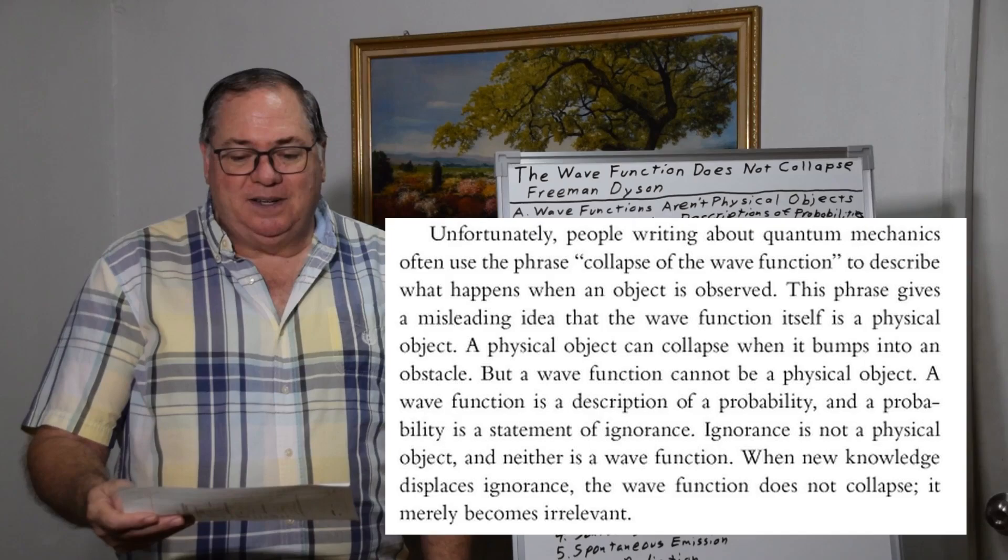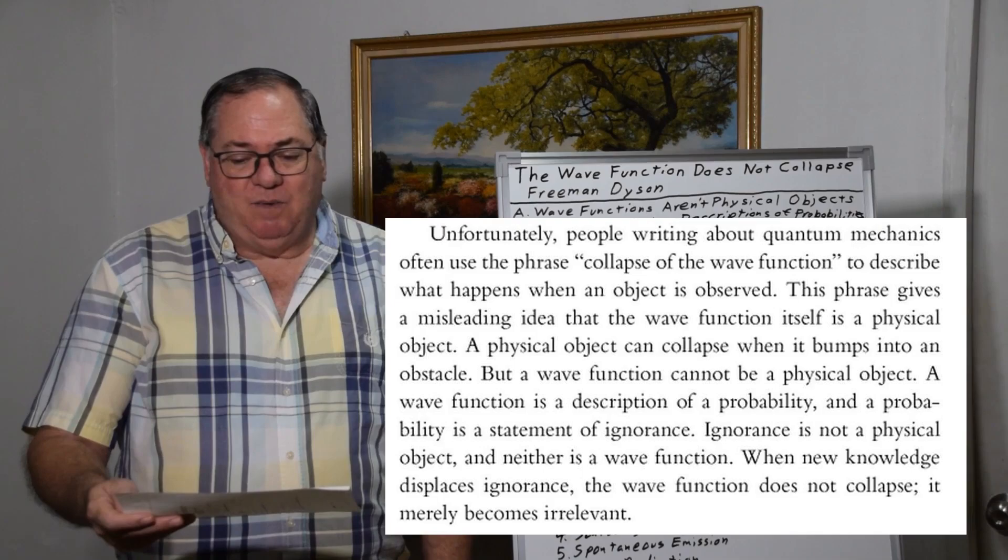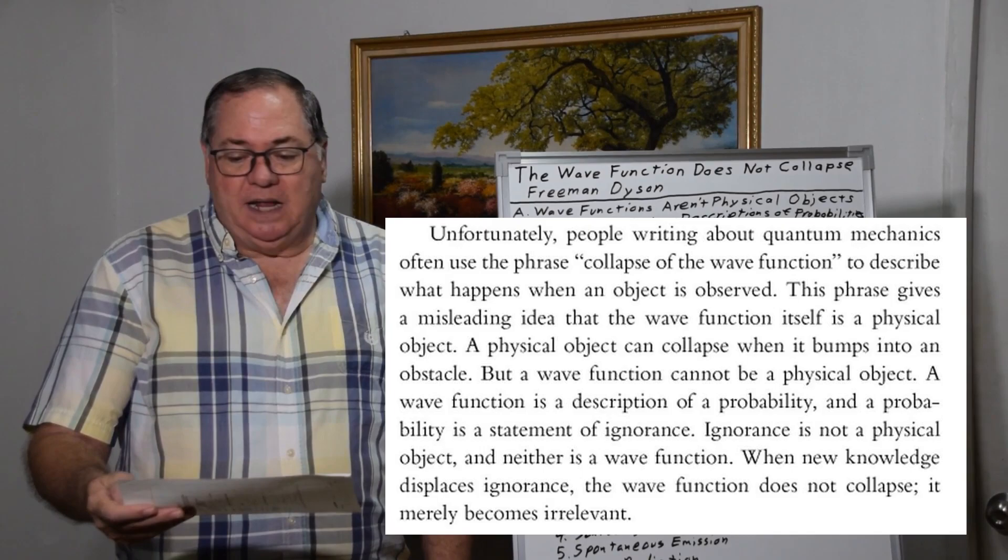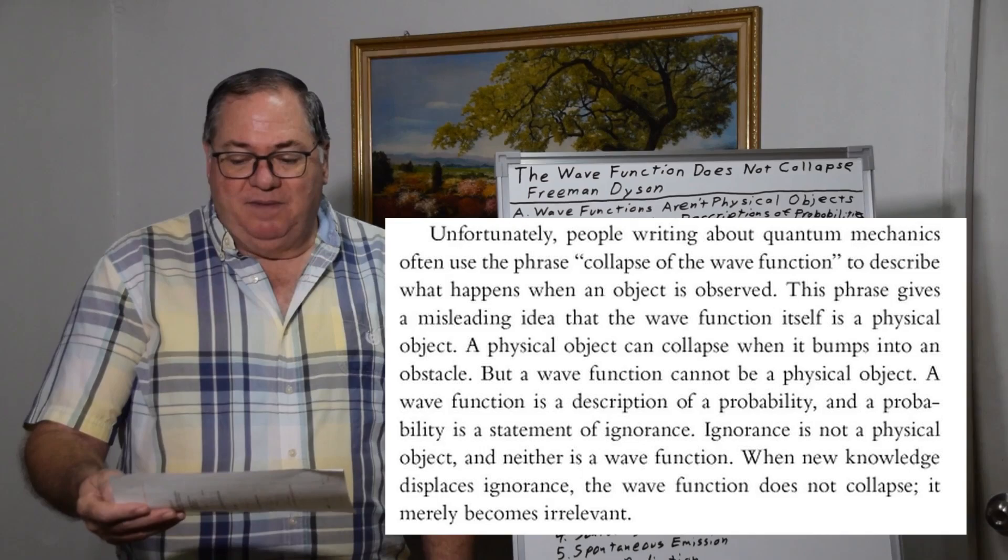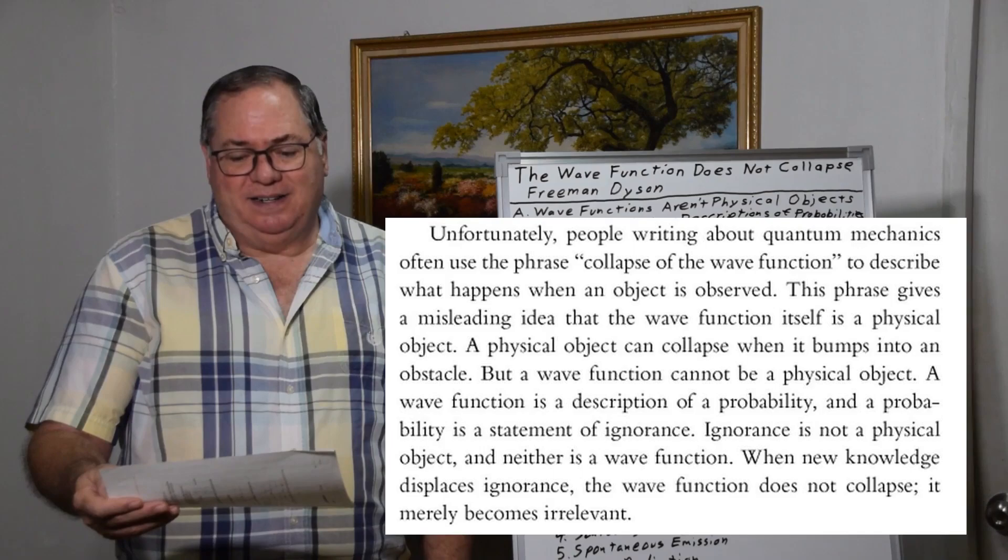Unfortunately, people writing about quantum mechanics often use the phrase 'collapse of the wave function' to describe what happens when an object is observed. This phrase gives a misleading idea that the wave function itself is a physical object. A physical object can collapse when it bumps into an obstacle, but a wave function cannot be a physical object.